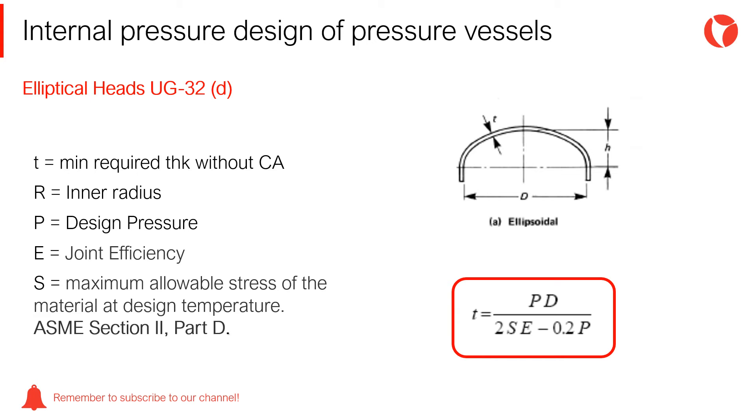Elliptical heads are the most used type. One of the main features is that the height of this head is exactly half the radius, which is why they are known as elliptical 2 to 1. The thickness required for elliptical heads is practically the same as for cylindrical shells. The variables intervening in the required thickness calculation are the same as in cylindrical shells.